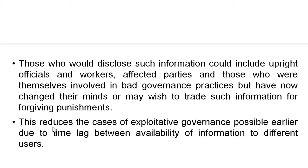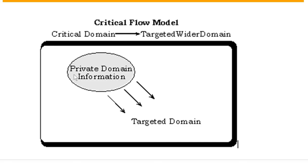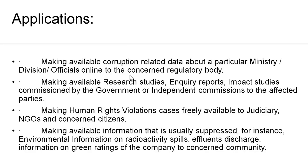This model reduces cases of exploitative governance that were possible earlier due to time lag between availability of information to different users. This is a very different model and every country cannot apply it because it contains very sensitive information disseminated to a targeted group. What the model does is reduce exploitative or bad governance. If you see the diagram, there is a private domain of information that is disseminated only to a targeted domain.